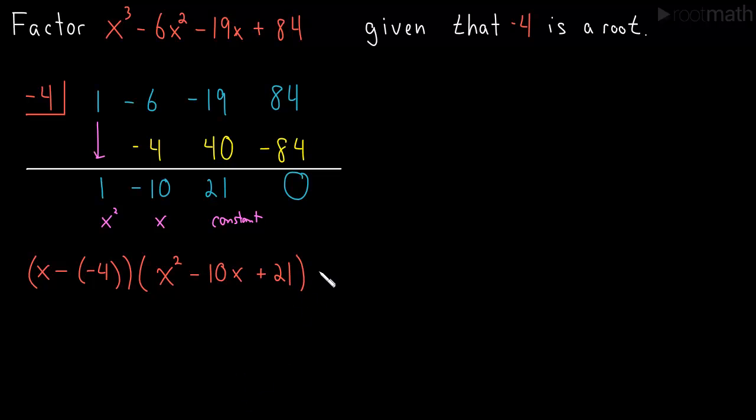We have minus 10 x's, and then we have our constant term positive 21. And this is equal to our polynomial that we started with that we were trying to factor.